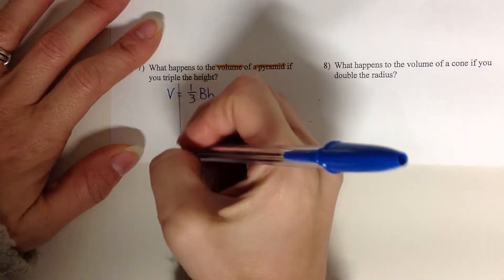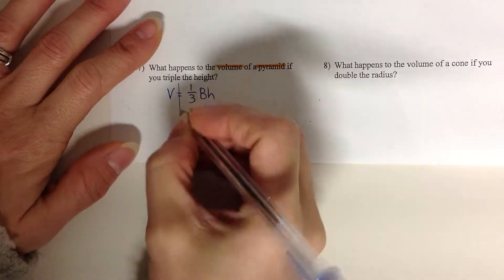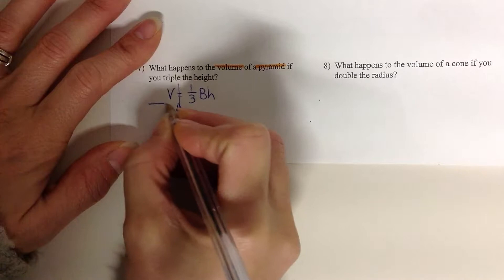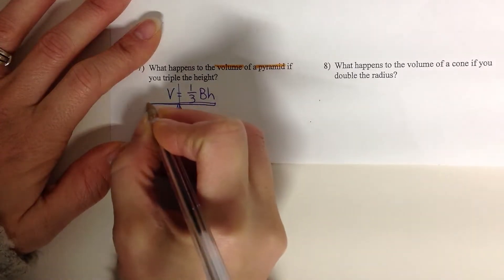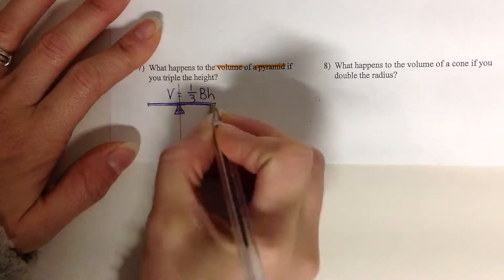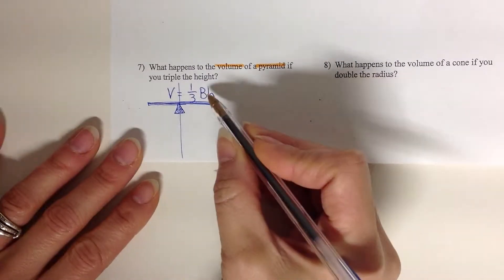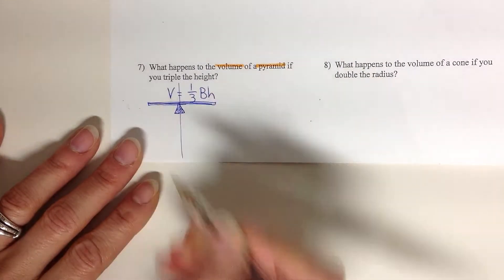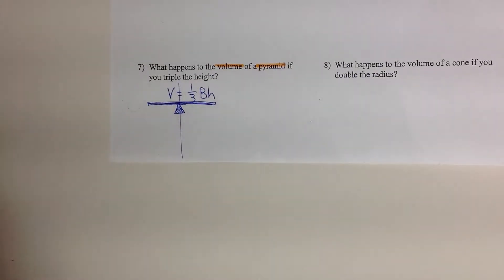So if your formula is all multiplication like this, what you have to think about is that if you do something to one side of the equation, remember I talk about this balance beam scale all the time. If I do something over here to the height, what's going to happen over here to the volume?